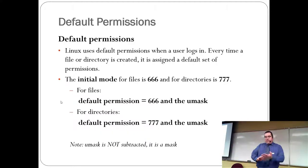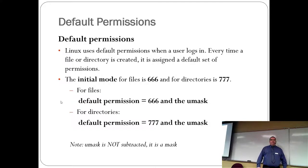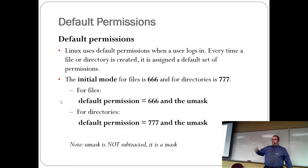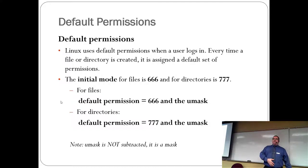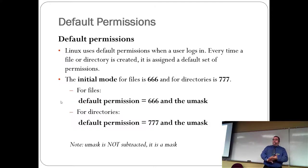Any good operating system applies default permissions. If there were no default permissions, there would never be permissions on a file and no one could access it — except root. When you log in, it sets default permissions for everything the user is allowed to do. The initial mode after login is 666 for files and 777 for directories. Every time you create a file, it's read-writable by everyone; every time you create a directory, it's read-writable and executable by everyone.